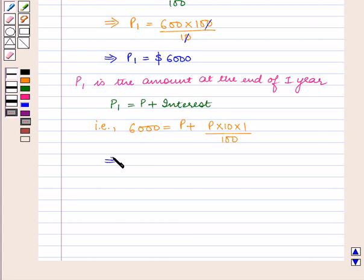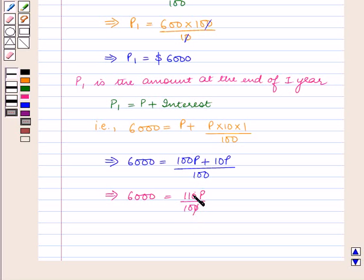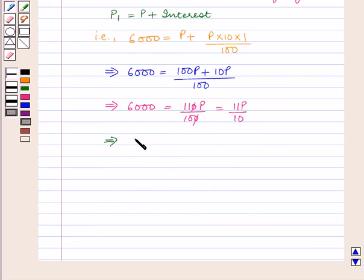This implies 6000 is equal to 100P plus 10P upon 100. This implies 6000 is equal to 110P upon 100, which is equal to 11P upon 10. So 60,000 is equal to 11P, which implies P is equal to $5,454.54.